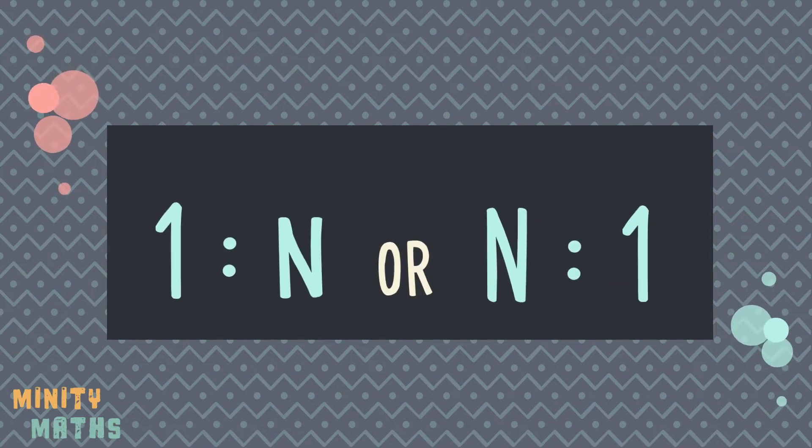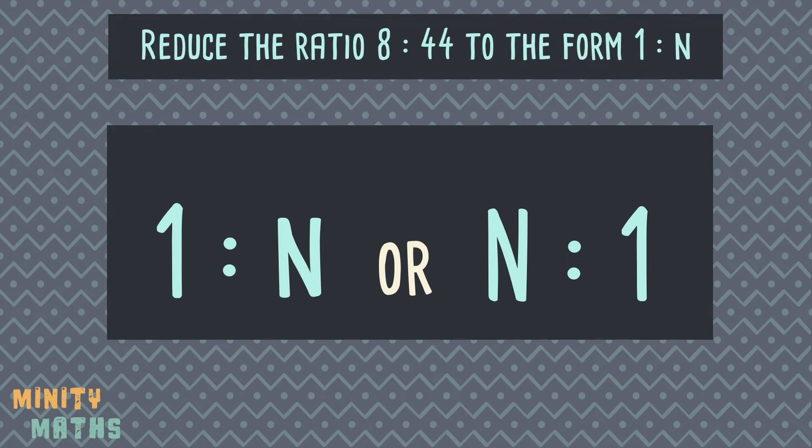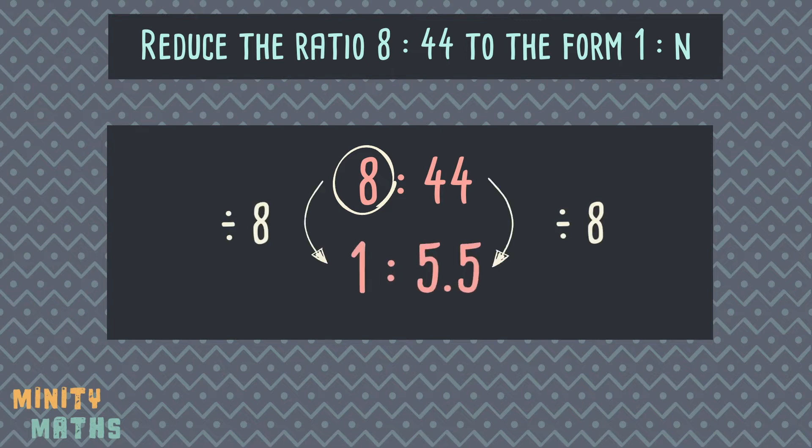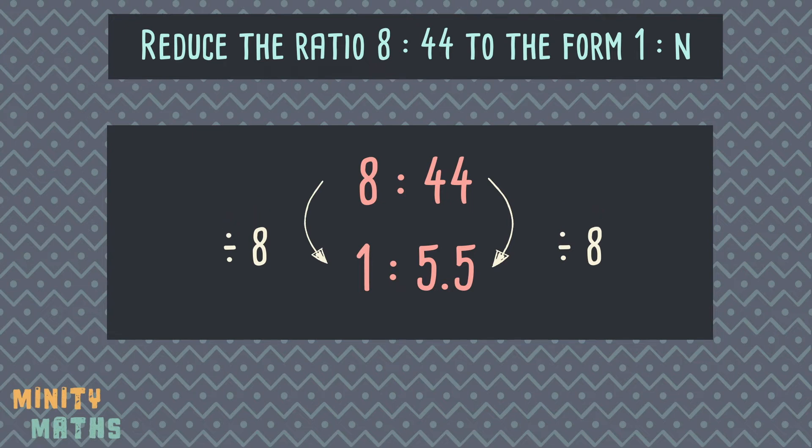Sometimes it can be beneficial to simplify the ratio in this form. This is often the easier way to compare the different proportions in the ratio, even though you may be left with some decimals or fractions. To do this, choose the smallest number in the ratio, then divide all numbers in the ratio by this amount. This will leave you with one of the numbers as a 1. However, only simplify this way if you are specifically asked to do so in the question.